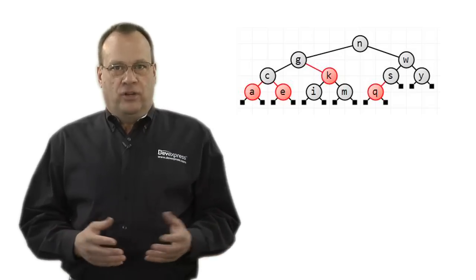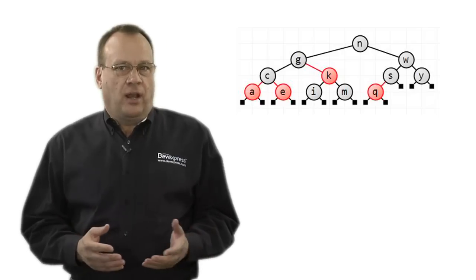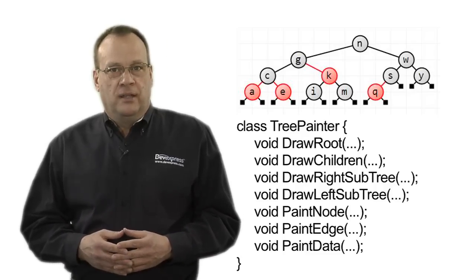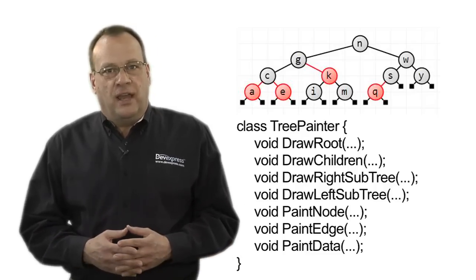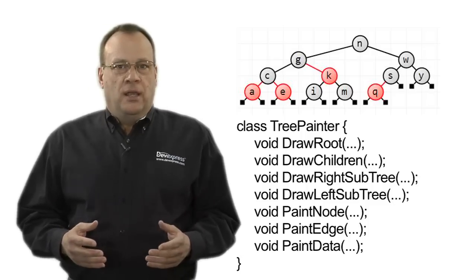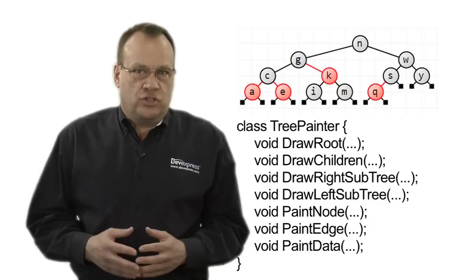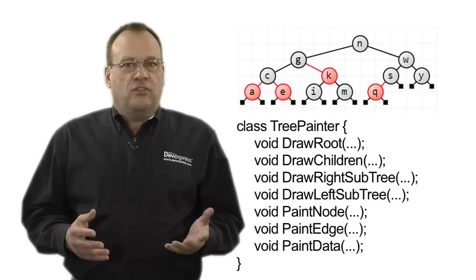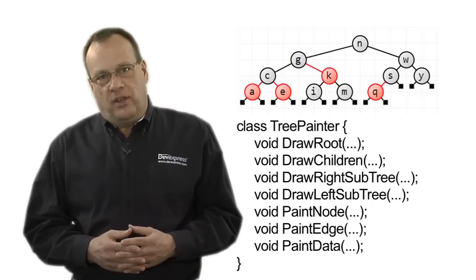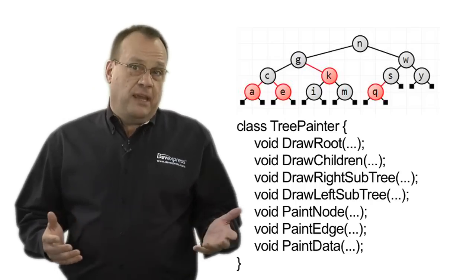Now let's take a look at an example from my own code. A while back I was investigating red-black trees, and I wrote a TreePainter class to render a simple binary tree to the screen. It had methods that recursively navigated the tree being drawn—these are called draw such-and-such—and it had methods that drew the edges and the nodes themselves. These are called paint such-and-such.